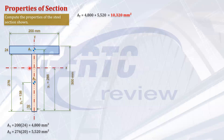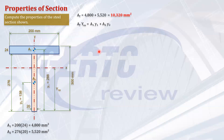Next, let's locate the neutral axis using Varignon's theorem, which states that the moment of the resultant quantity about any point equals the sum of the moments of the individual quantities about the same point. Taking moments at the bottom, the total area times ȳ_NA equals Area 1 times y1 plus Area 2 times y2.